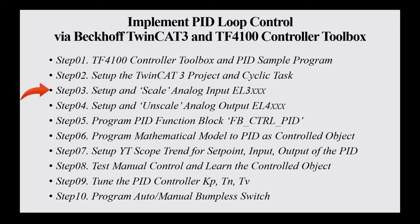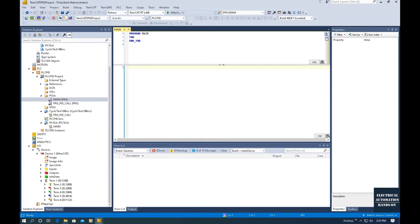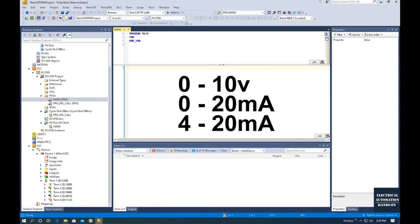Hello everyone. In this video we will discuss step 3: how to set up and scale the analog inputs. We will mainly introduce the hardware from the EL3000 Beckhoff analog input cards. We use different kinds of transmitters or sensors to get sensor signals as process feedback. The commonly used signals from sensors are basically 0-10V or 4-20mA, and in some cases 0-20mA — current or voltage signals. To receive those signals, we use analog cards.